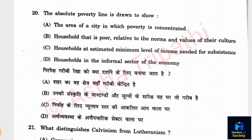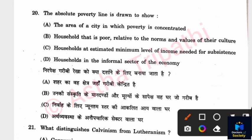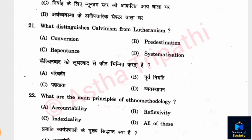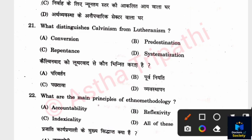Question 20: The absolute poverty line is drawn to identify which of the following? Options: The area of city where poverty is concentrated, households that are poor relative to norms of their culture, households at an estimated minimum level of income needed for subsistence, households in the informal sector. The answer is C — households at an estimated minimum level of income needed for subsistence. Question 21: What distinguishes Calvinism from Lutheranism? The answer is Predestination.